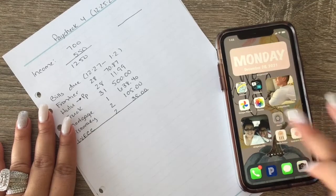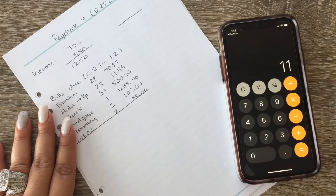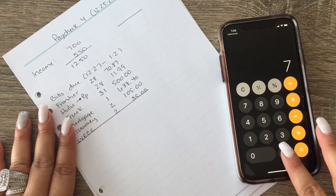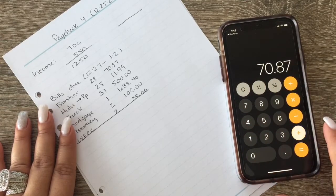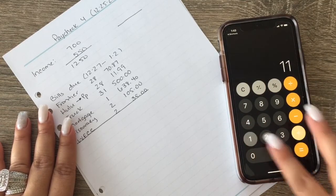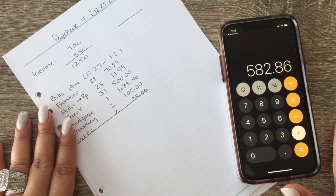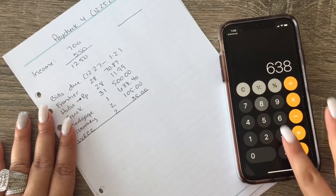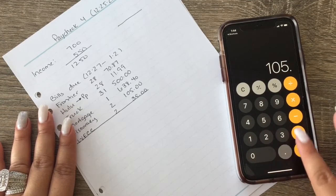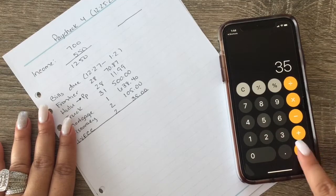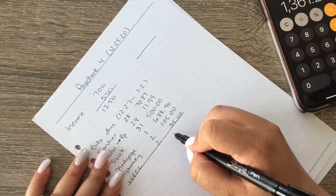I'm going to pay them bills in just a minute. So, $70.89 plus $11.99, $500, $638.40, $105, plus $35 is $1361.26.